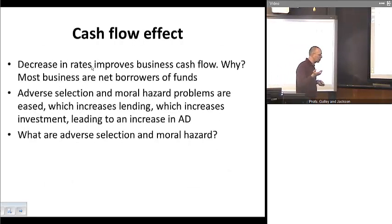We also have what's called the cash flow effect. So the bottom line here is this, and this, by the way, works through especially nominal interest rates, and the idea here is very straightforward. A decrease in especially nominal interest rates works to improve business cash flow. And the reason is very simple. Most businesses are net borrowers, and so to the extent that interest rates fall, that will improve their cash flow position.